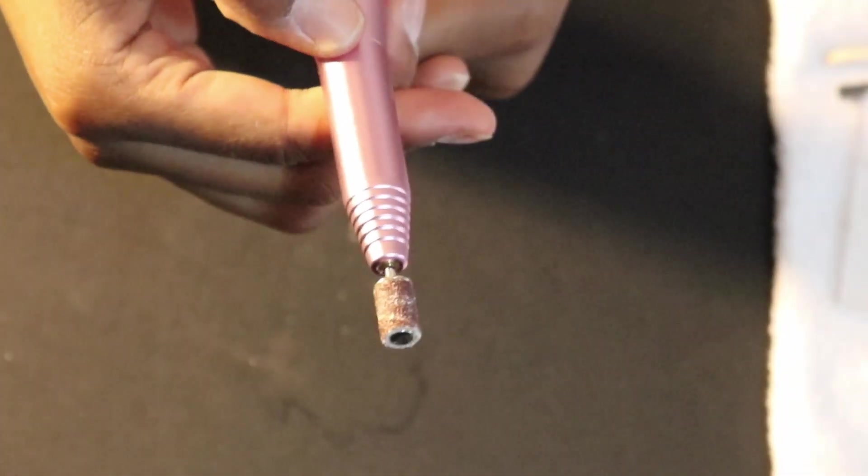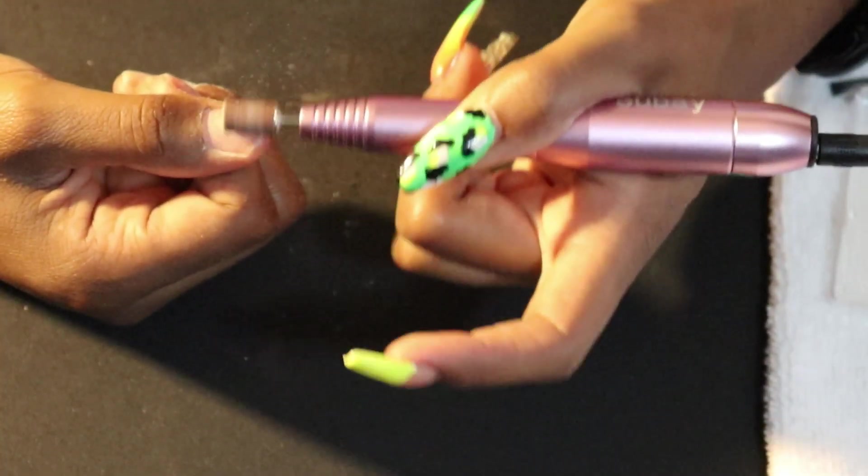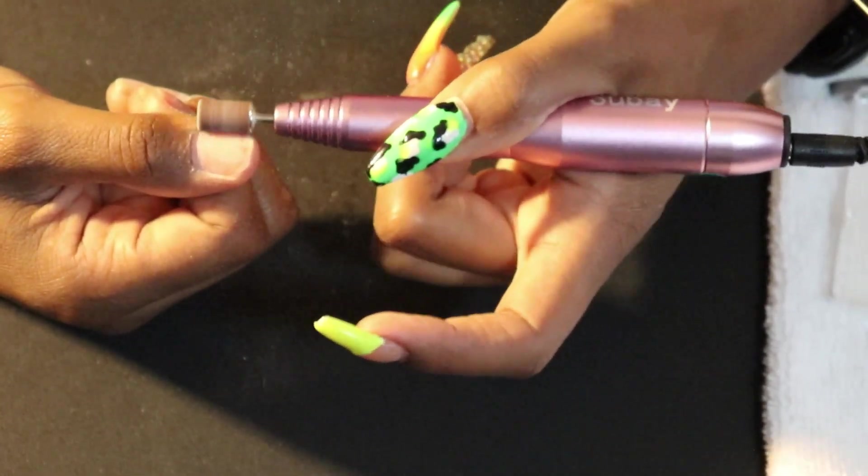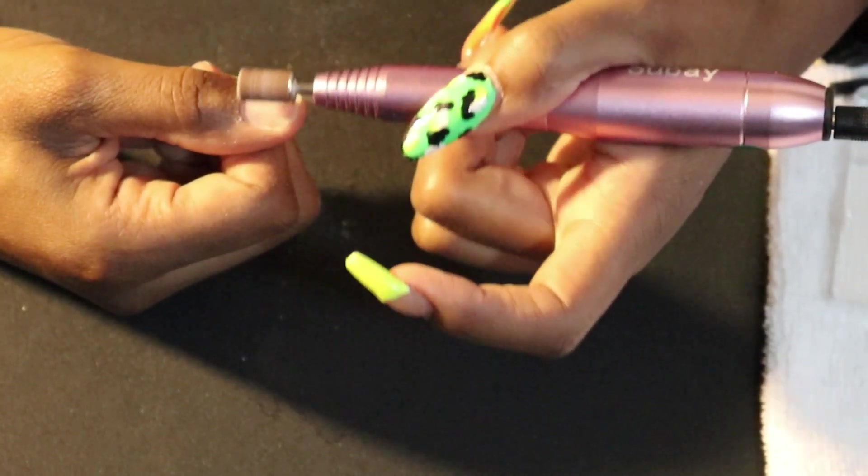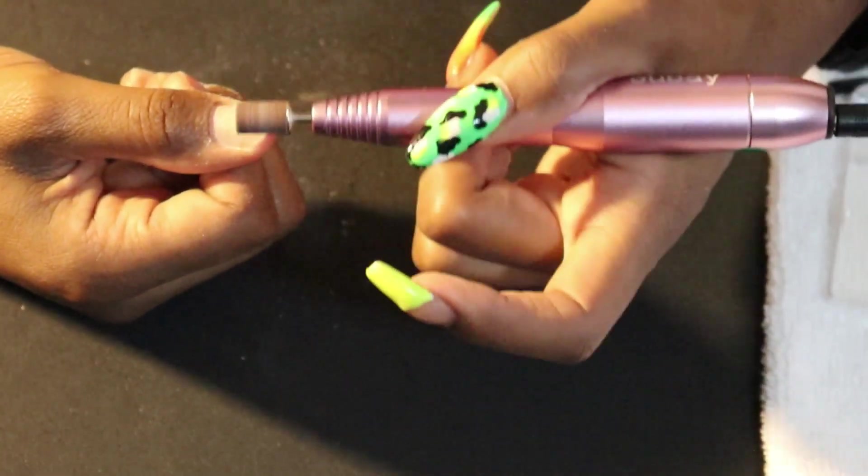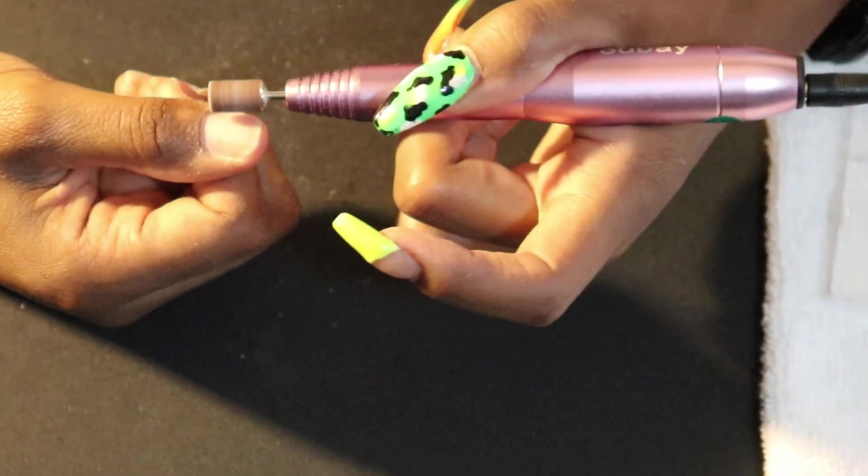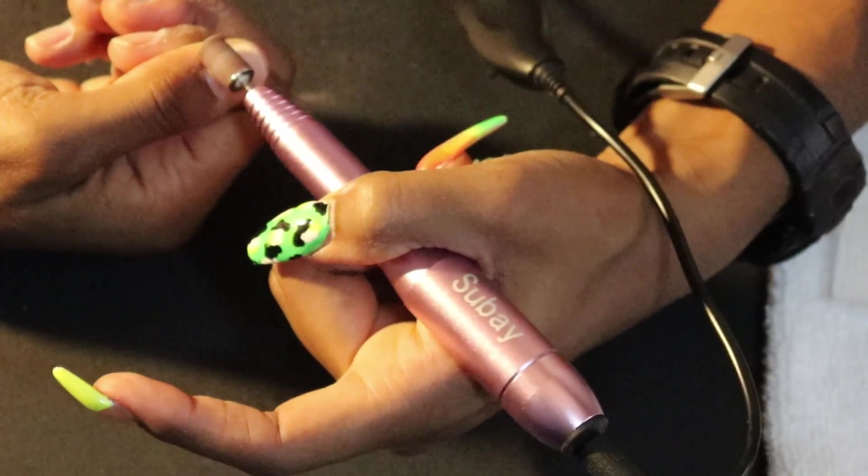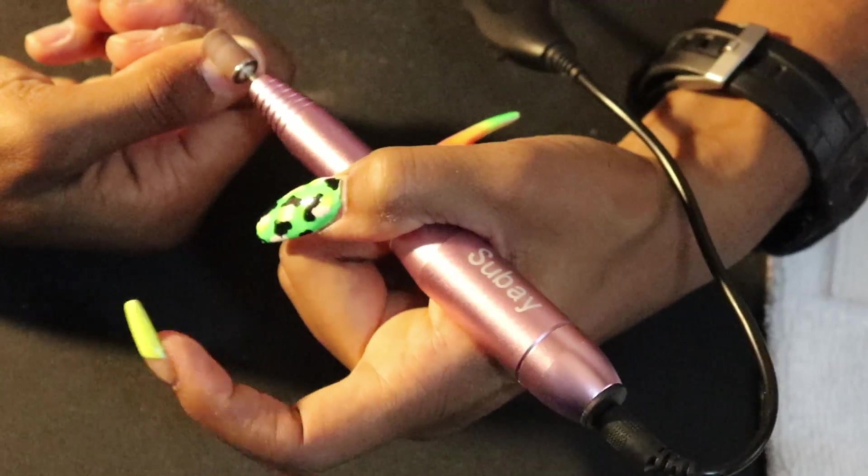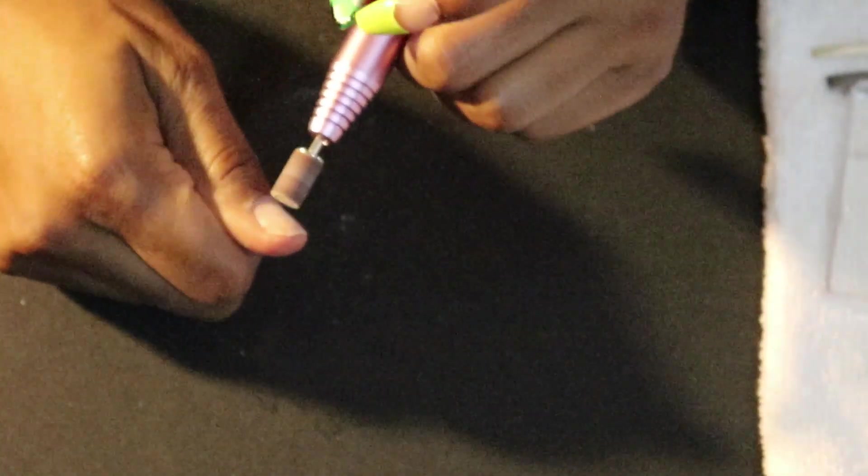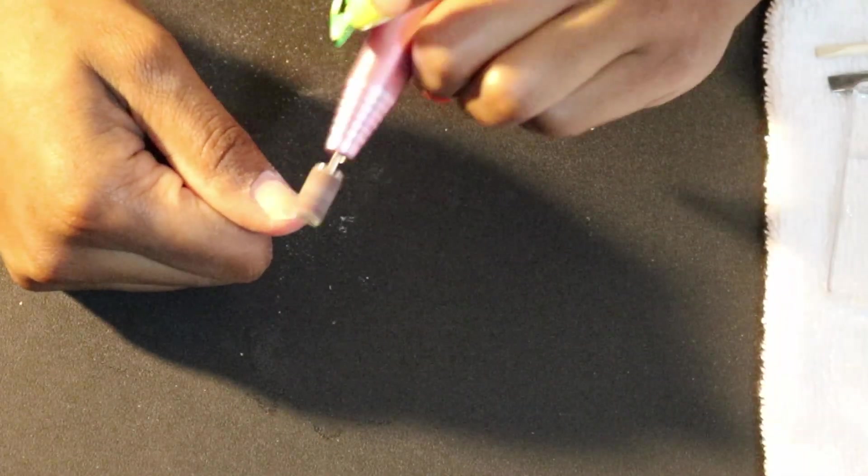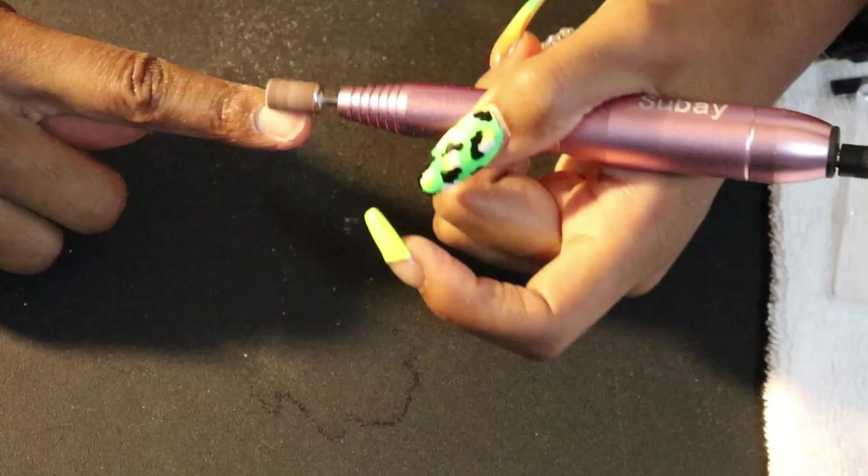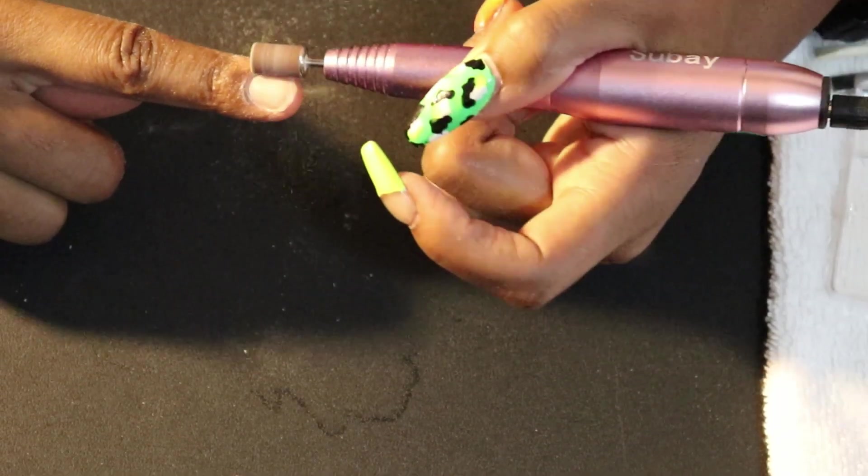Once all the cuticles have been removed, I'm going to put this sanding bit on my e-file and lightly file down the surface of my nail to remove the shine and make it easier for the acrylic to adhere. Do your best to go in one direction when you're doing this so you don't have any lines in your nails or any damage. I usually go in one direction and then around the perimeter.